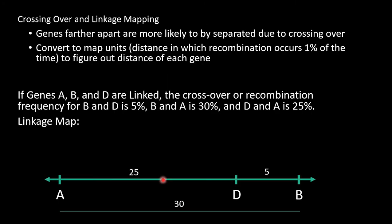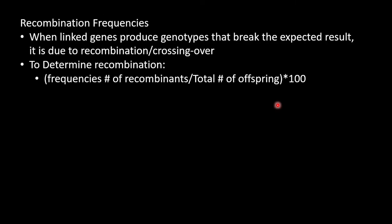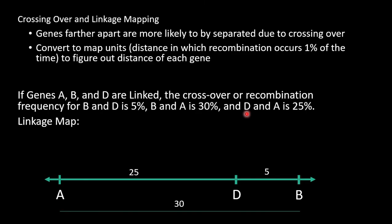We can use recombination frequencies and crossing over rates to determine the position of genes. Genes farther apart are more likely to be separated due to crossing over. We use map units in which one map unit is the distance in which recombination occurs 1% of the time. Let's work out this problem. If genes A, B, and D are linked, the crossover or recombination frequencies for B and D is 5%, B and A is 30%, and D and A is 25%. We start by plotting the farthest distances first. We put A and B at the farthest ends, and since we know that D must be between these two, we place it inside the A to B range. We can calculate the frequencies by dividing the number of recombinants by the total number of offspring and then multiplying by a hundred. Then we use these recombination frequencies to make our gene mapping.